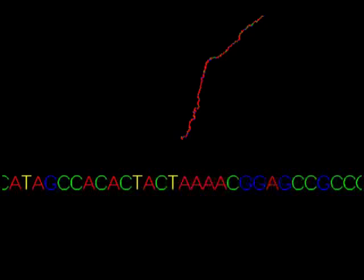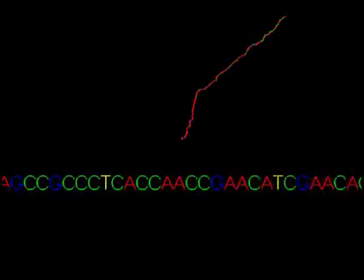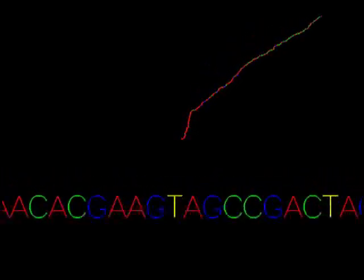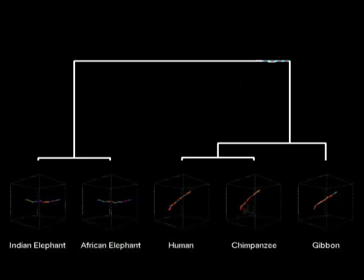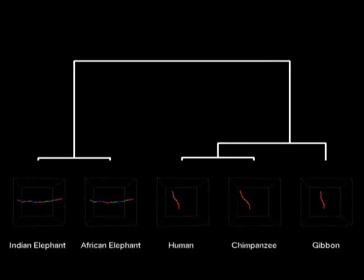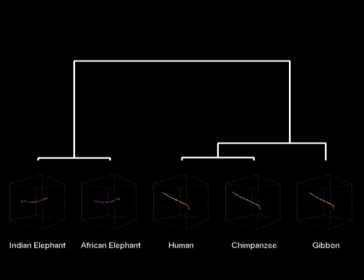Here, we are interested in the similarity of the human and chimpanzee DNA. In order to give some context, we also consider another ape, the gibbon, and another pair of animals that are closely related to each other but not to primates, the African and Indian elephants.